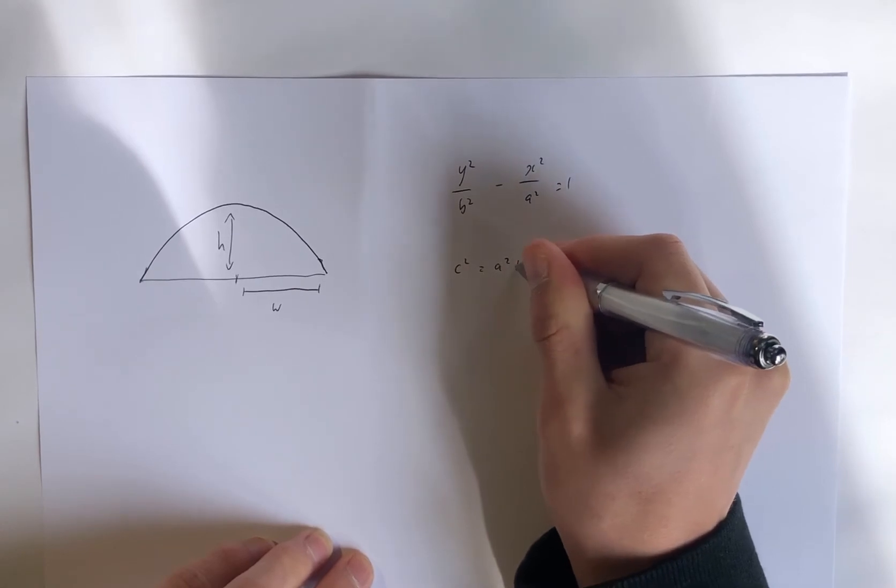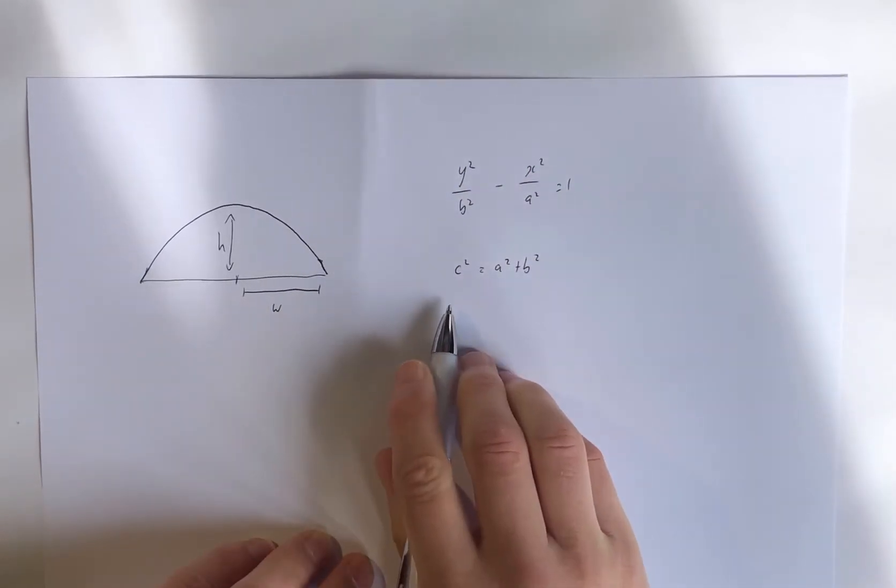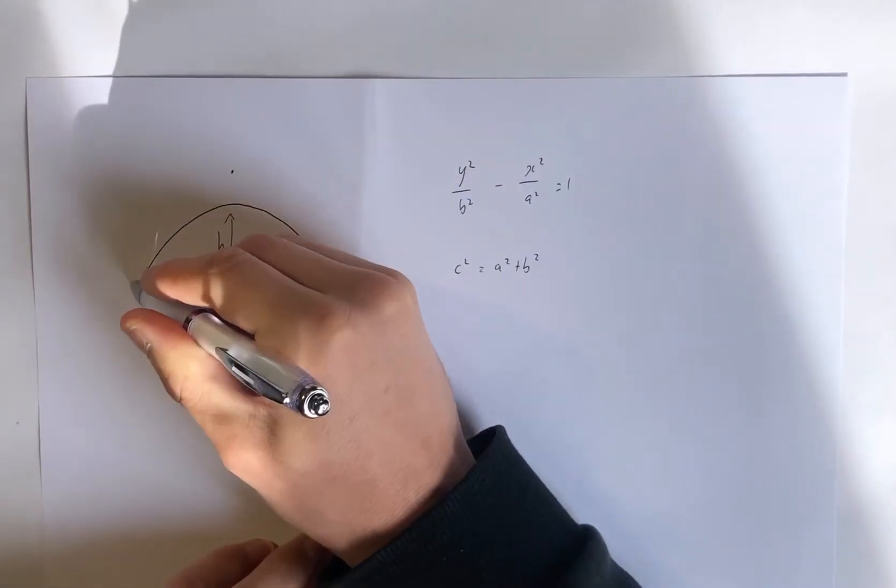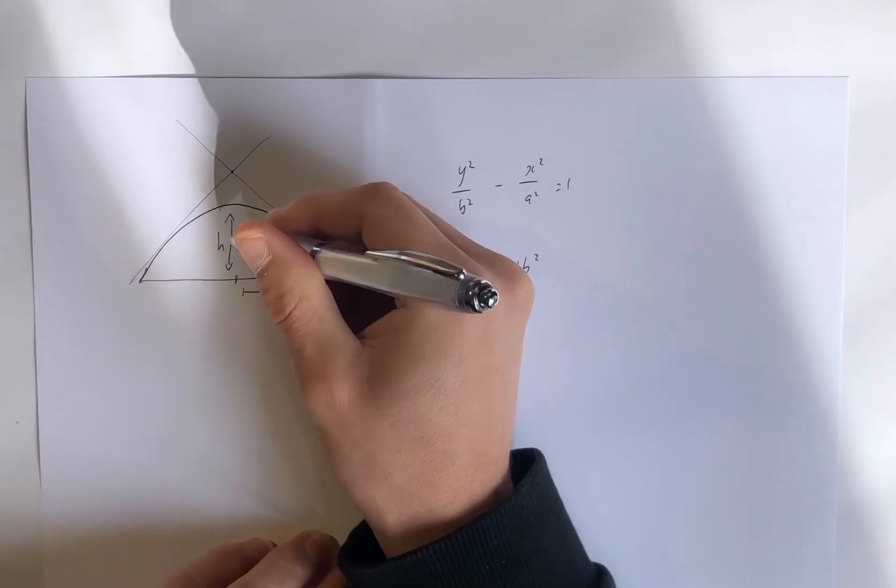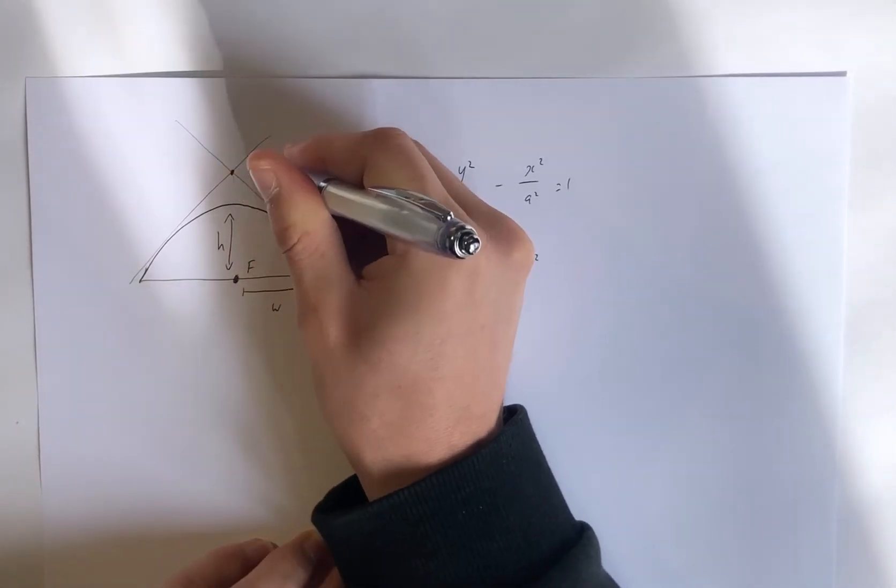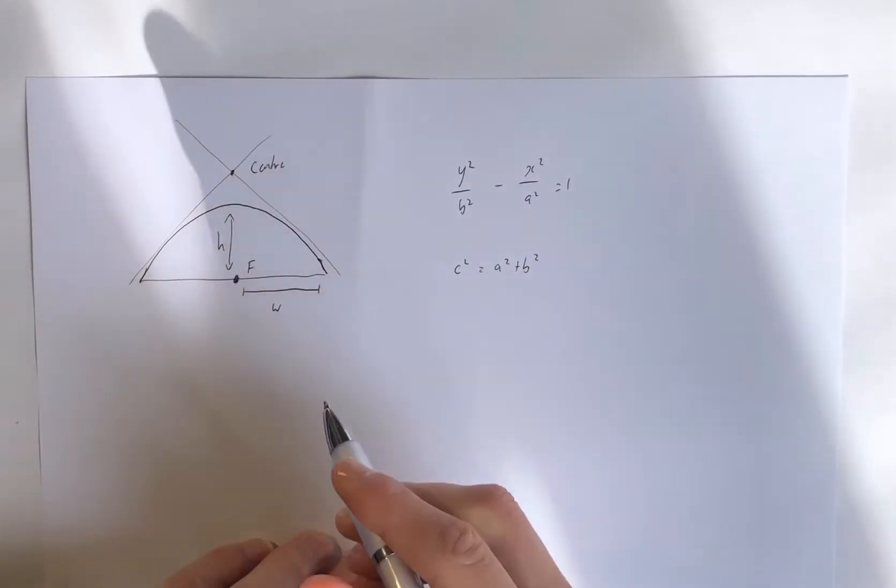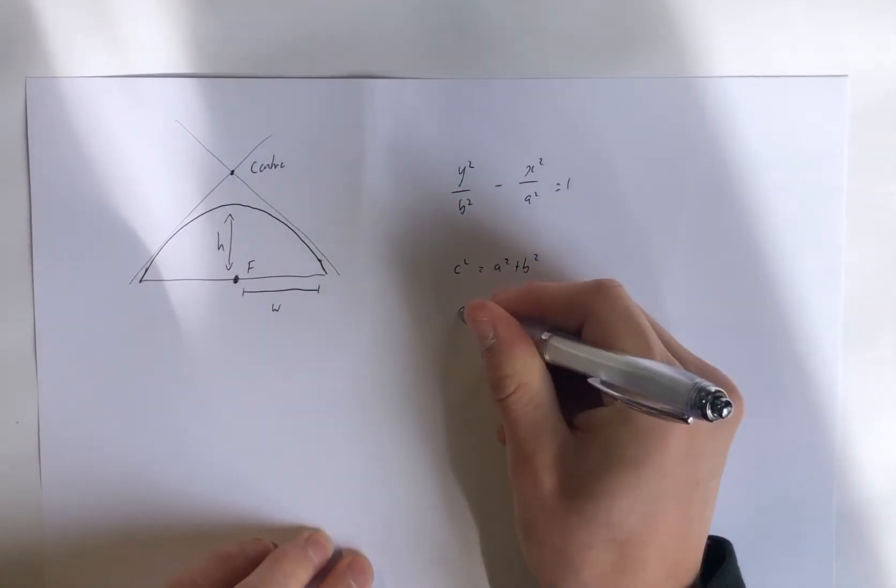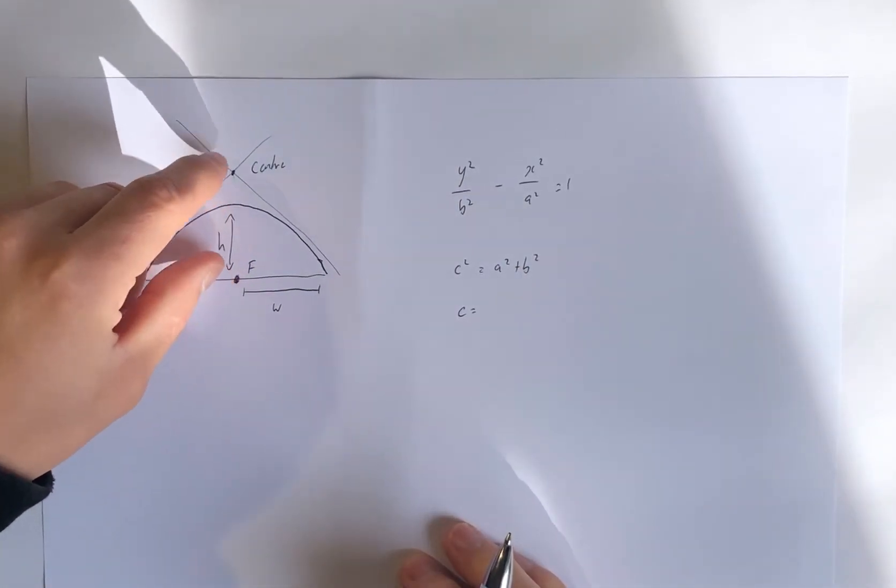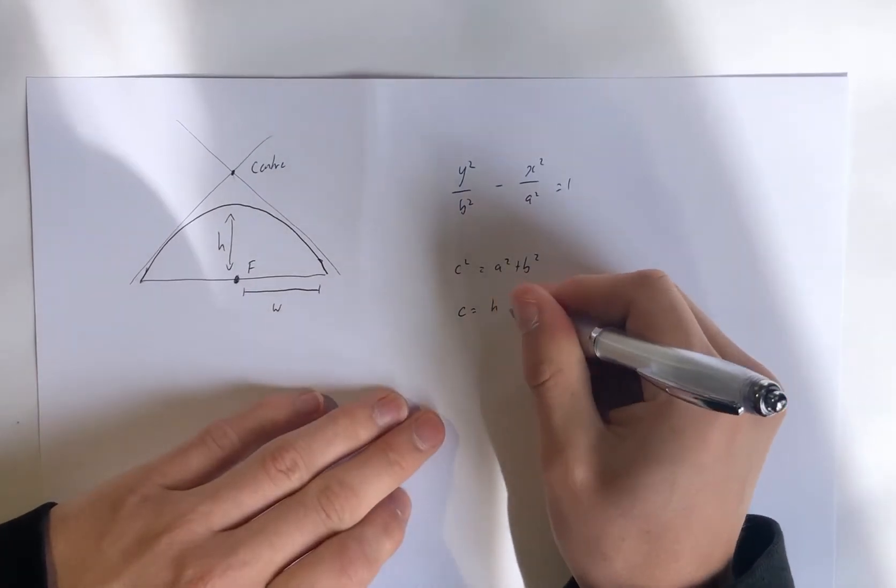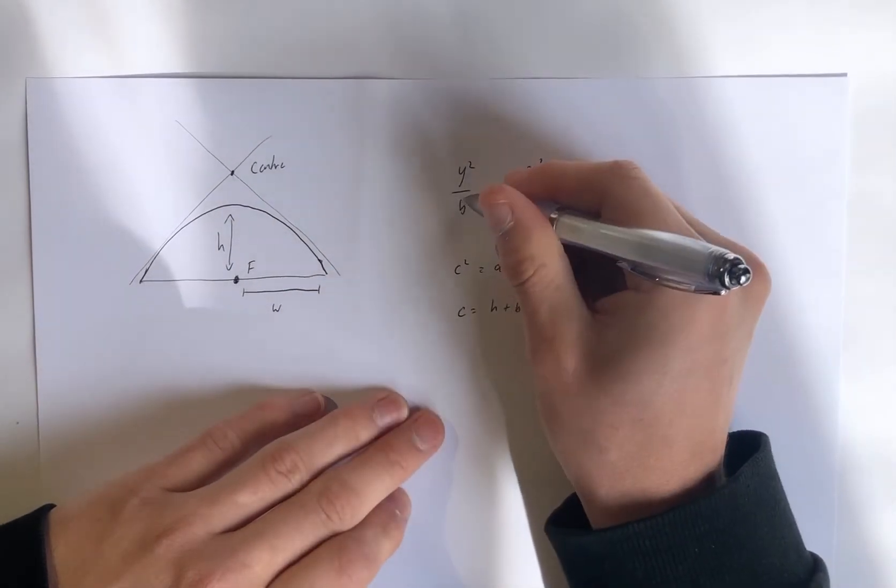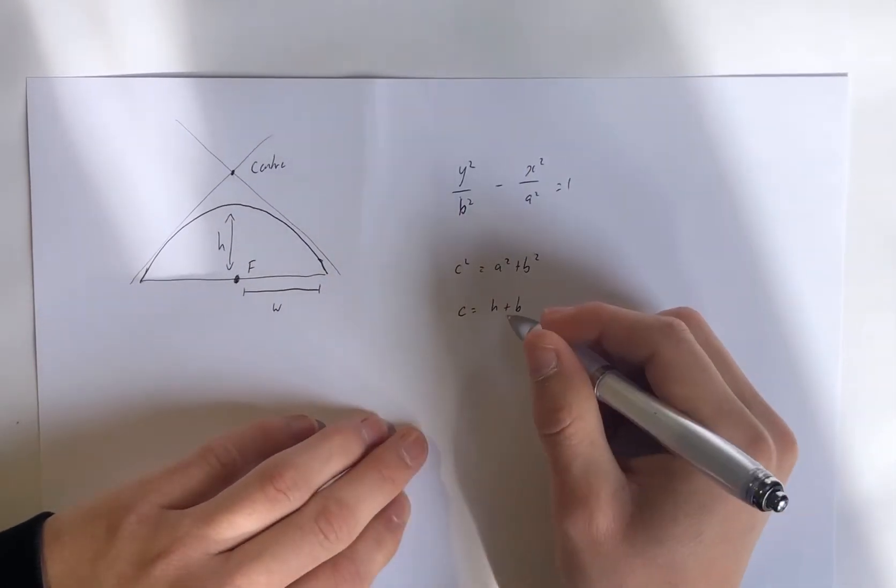We know that the center up there, this total distance from this focus to this center, that's c. And we know that c is h plus b. h the height, and c plus b the distance from the center to the vertex. Alright. Remember it's that b there. And we also know that the width, that two times that width is the lattice rectum, 2a squared over b.